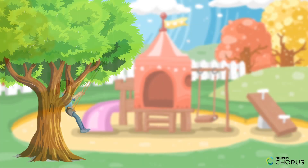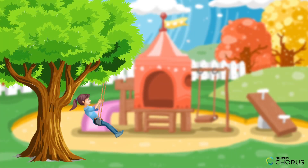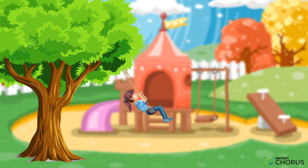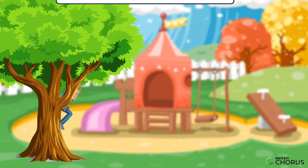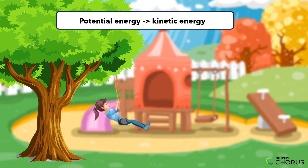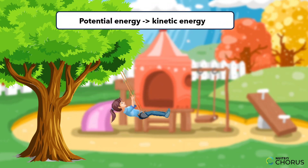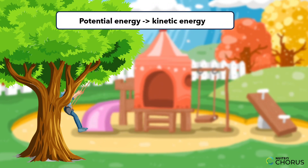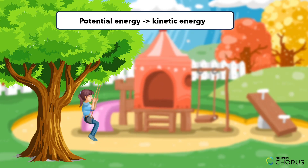Imagine a playground swing. As it moves back and forth, potential energy is converted into kinetic energy, propelling the swing higher and higher. This example demonstrates how motion and energy transfer are intertwined.